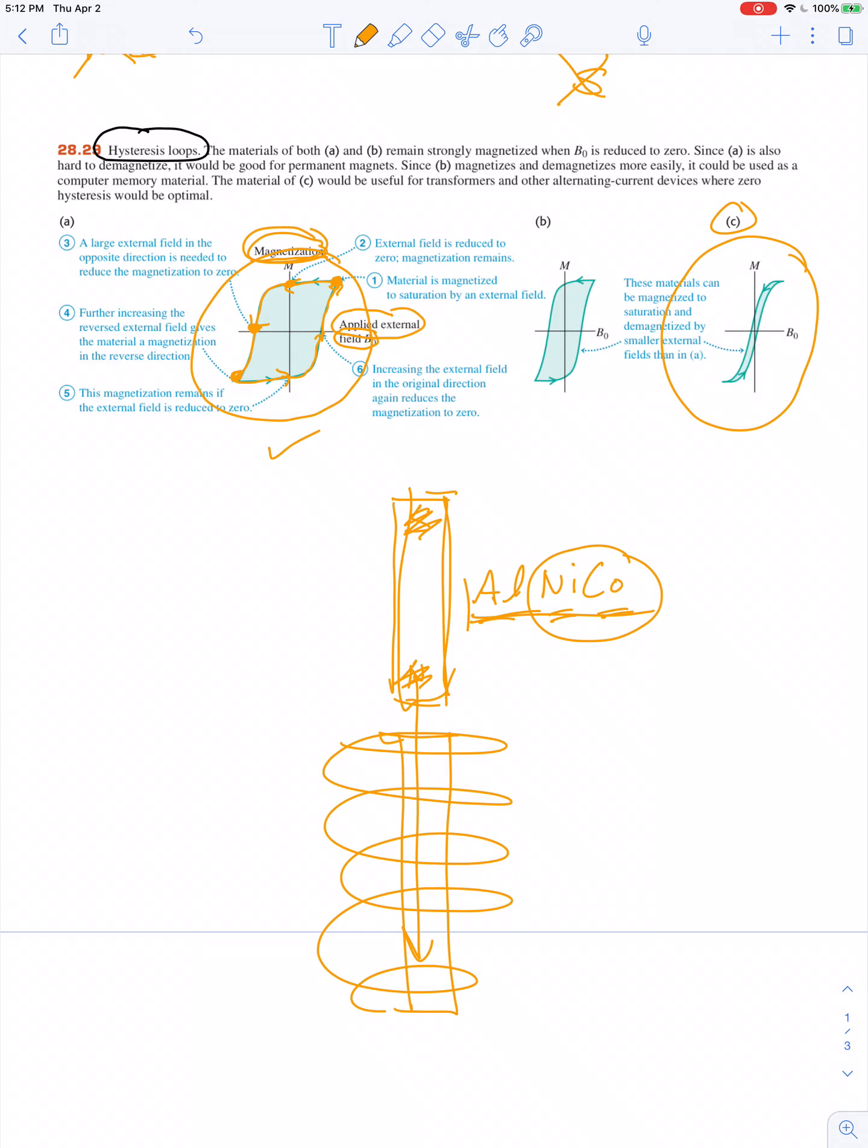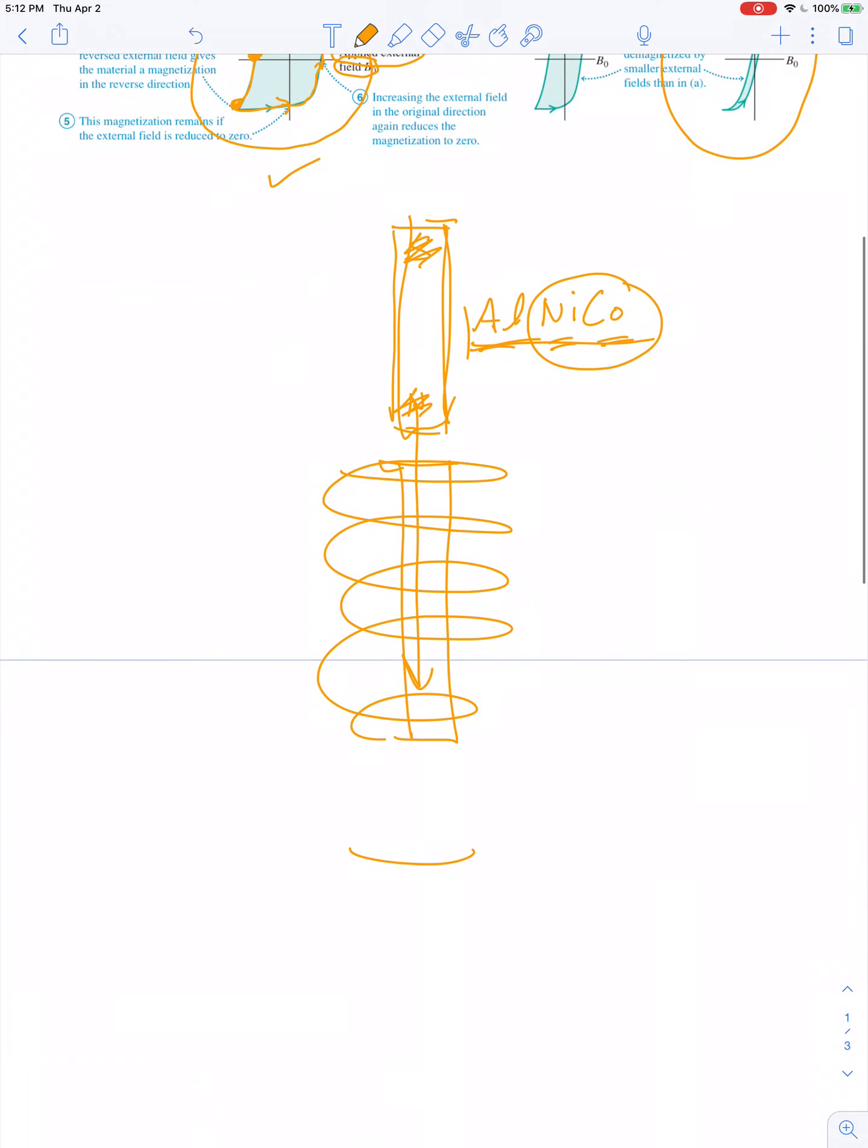However, if I put this alnico magnet into the Thomson coil and while the current is flowing, I very rapidly swipe the magnet and pull it out, then I completely demagnetize it. You can watch that video and see that I can magnetize and demagnetize an alnico magnet.